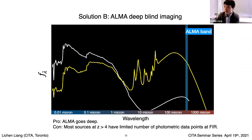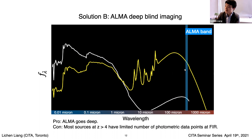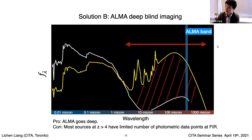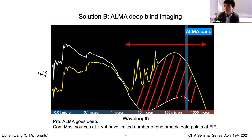Solution B is ALMA deep imaging. I'm showing the ALMA bandpass, which usually covers the long-wavelength Rayleigh-Jeans tail of thermal galaxy emission. The idea is that you measure the flux density in the Rayleigh-Jeans tail and extrapolate the total infrared luminosity — essentially the area under the SED. The key uncertainty in this technique is how well we understand the shape of the far-infrared SED.